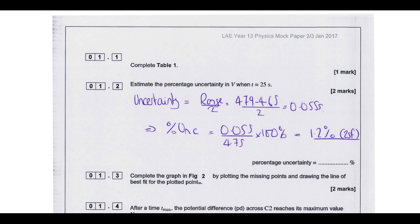Then for this next one, estimating the percentage uncertainty when T equals 25. So the first thing is you've got repeat readings, so you should be calculating your uncertainty, not just guessing that it's the precision of the measuring device. So we've got our largest and our smallest repeat readings. We've found the range divided by two, and that gives us the uncertainty. Then percentage uncertainty is uncertainty divided by value times 100, and it's always given to two significant figures.